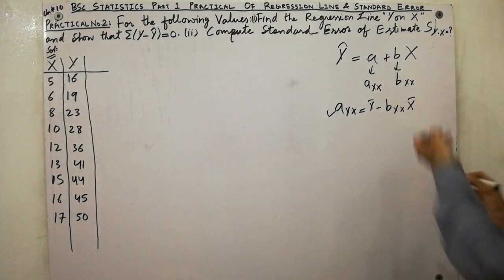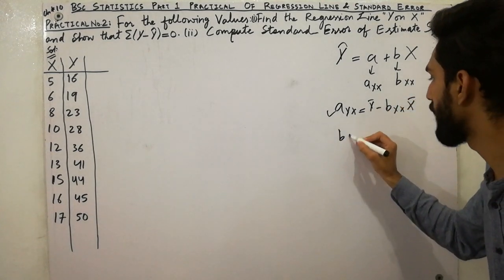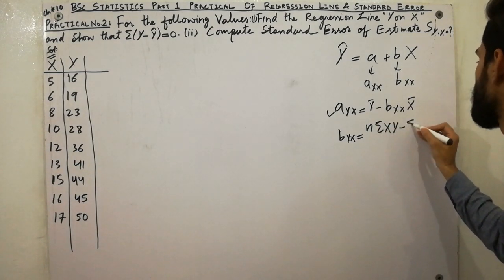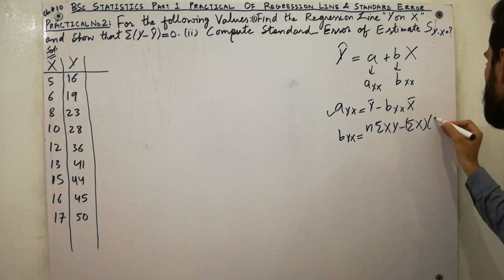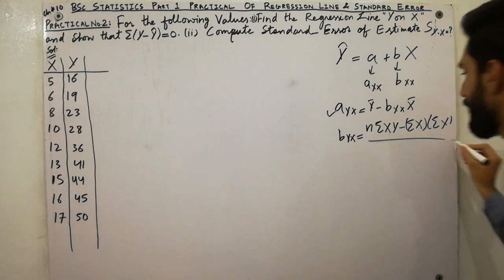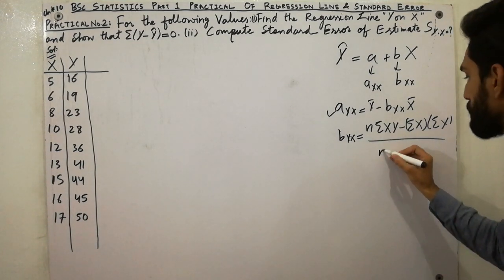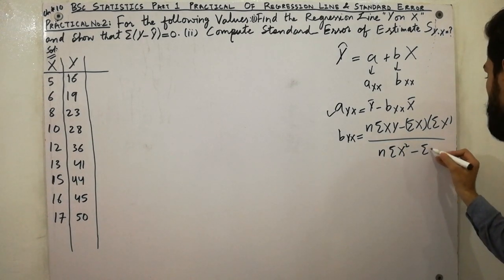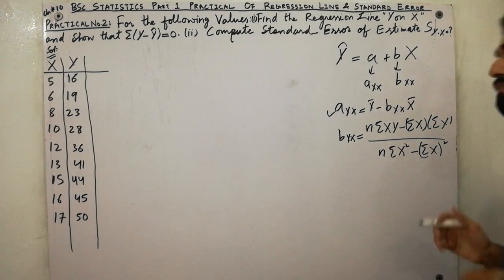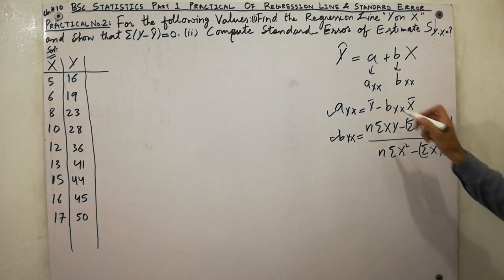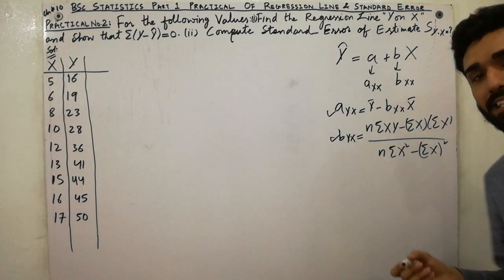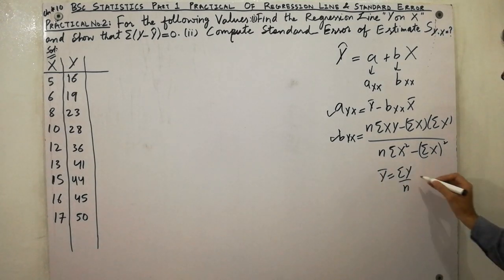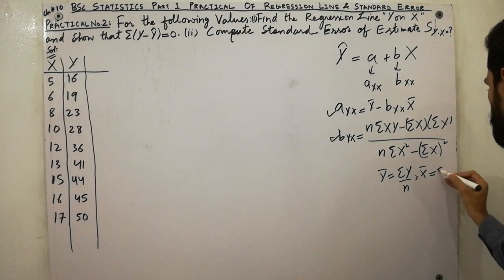The formula for b(y.x) is: b(y.x) = [n·Σxy − Σx·Σy] / [n·Σx² − (Σx)²]. And for ȳ and x̄: ȳ = Σy / n and x̄ = Σx / n. These are the formulas we will use.